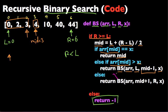And if X is larger than the middle element, then we're going to look at the right half of the array. So we're going to call binary search — the same function — with the same array, the same X, and the same R, so R doesn't change in this case, but the new L becomes mid plus 1.